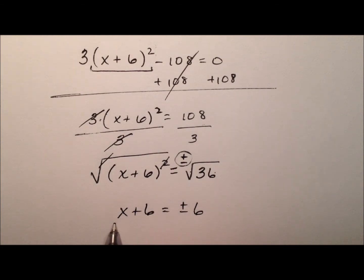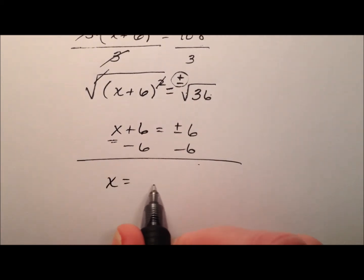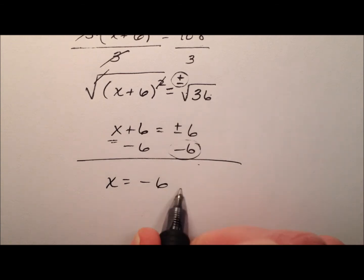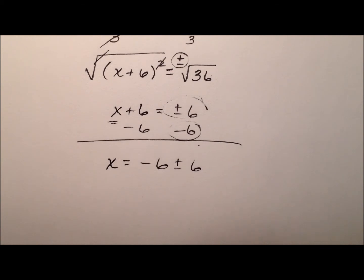To finish getting this x by itself, we're going to subtract 6 from both sides. And what this will look like is x equals negative 6 plus or minus 6. What does this plus or minus do? It means we actually have two values for x.